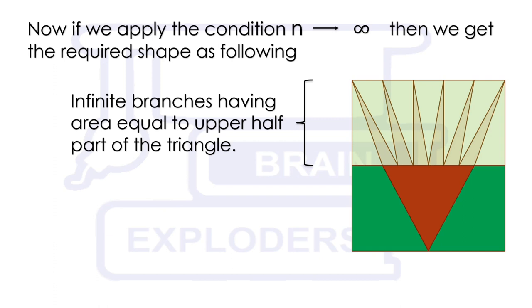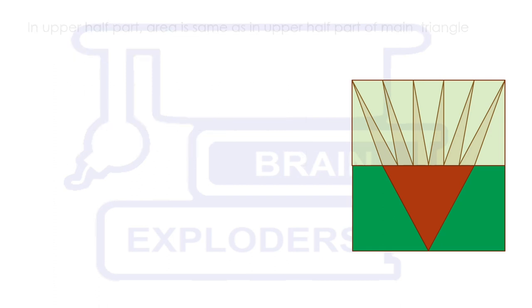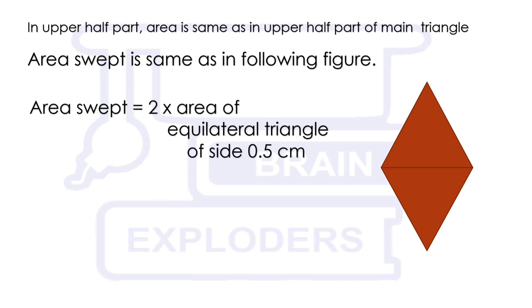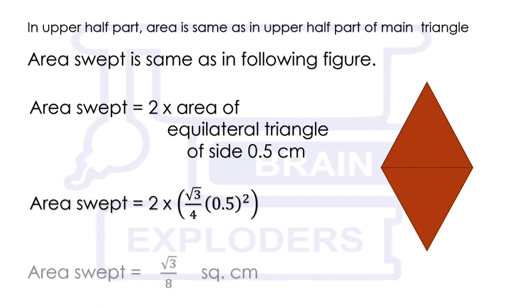The lower shape will become a triangle of 0.5 cm length. In the upper part there is no overlap, therefore its area must be equal to the area of the upper part of our main triangle. So the area swept will be equal to the figure shown here. Area swept equals 2 times the area of an equilateral triangle of side 0.5 cm, which is root 3 over 8 square cm.